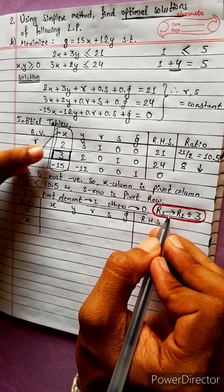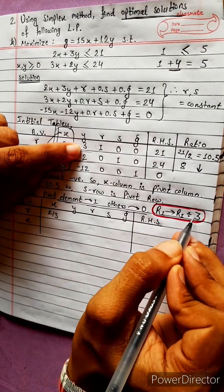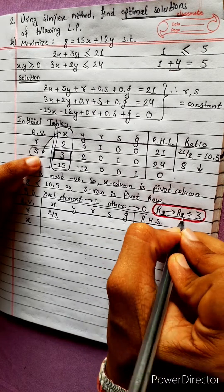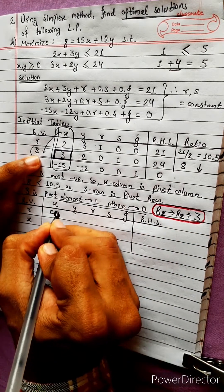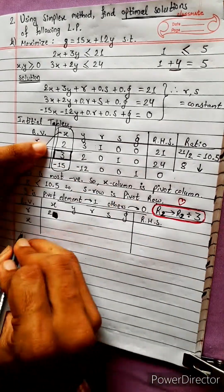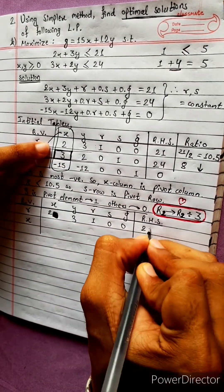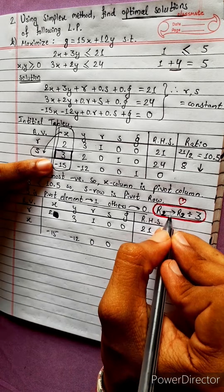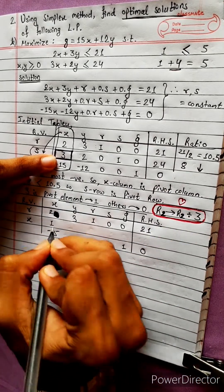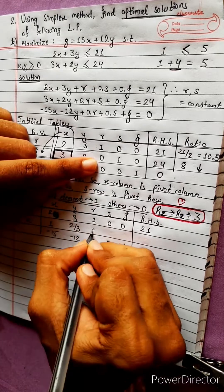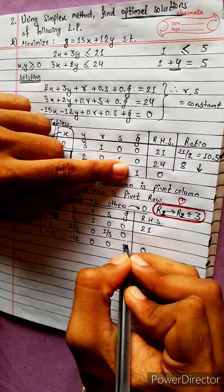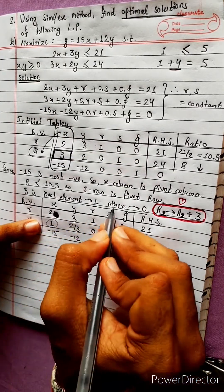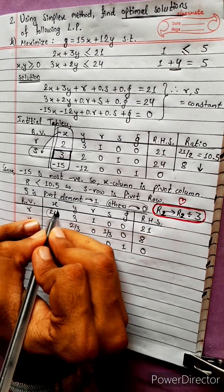New R1 after dividing by 3: values are 2/3, 1/3, 8. R2 remains: 3, 1, 0, 1/3, 0, 8. Now the pivot element in R2 is 1. We need to make the other elements in the pivot column equal to 0.